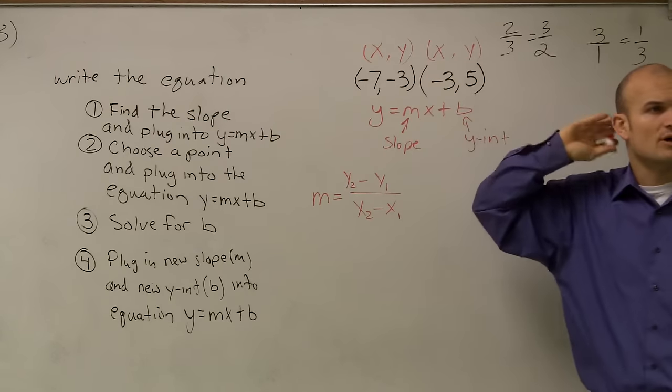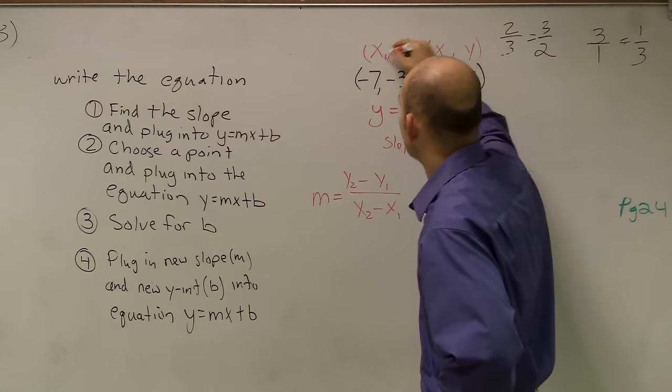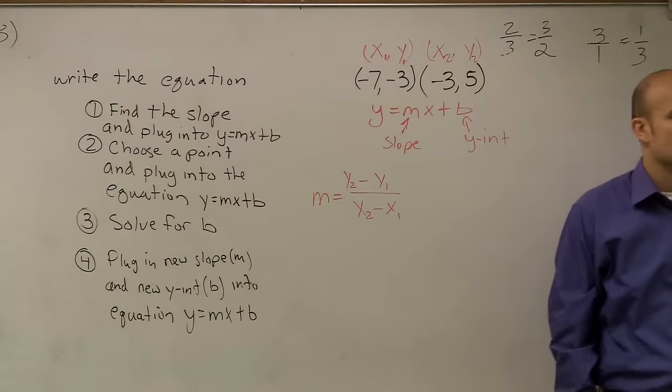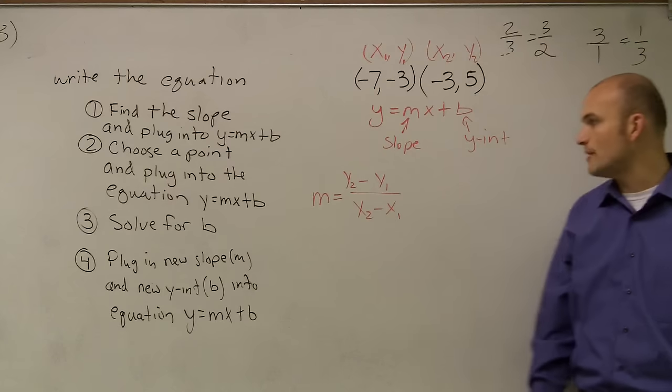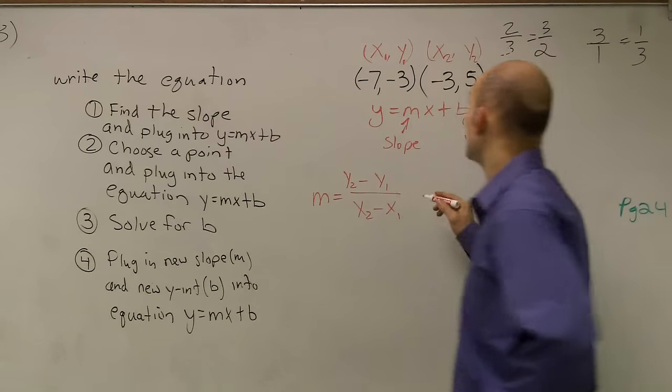So we don't know which one we're talking about. So what I'm going to do is I'm going to label this x1 and x2, y1 and y2. That just helps me distinguish my x and y coordinates. So then what I'm going to do is I'm going to plug them into my equation to find my slope.